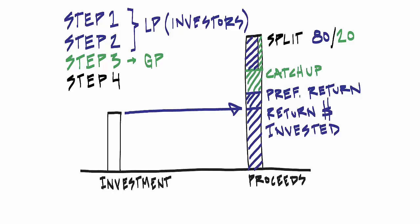After the catch-up, all remaining cash inflows are split between the GP and the LP on an 80-20 basis.